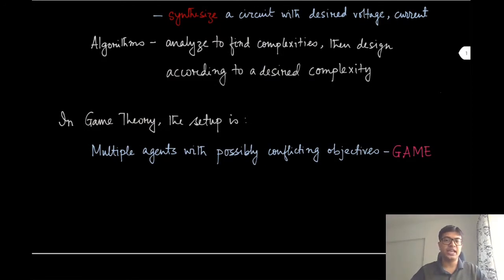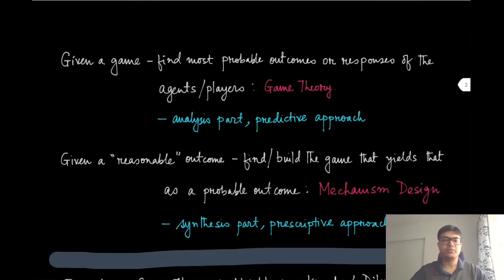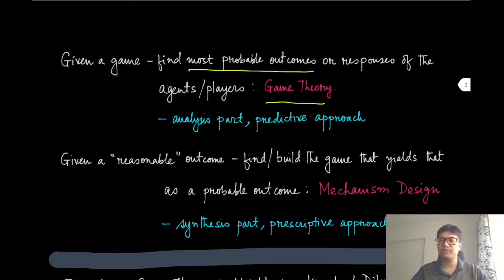The important part is that these agents have conflicting objectives. We will use the terms agents and players interchangeably in this course. This setup of multiple players or agents with their conflicting objectives or payoffs is what we will be calling a game throughout this course. In the game theory part — the first part of this course — we start with a given game and try to find what the most probable outcome is, which depends on the responses of these agents. This is the analysis component, and the guarantee we provide here is predictive: we are predicting what is going to happen in this game.